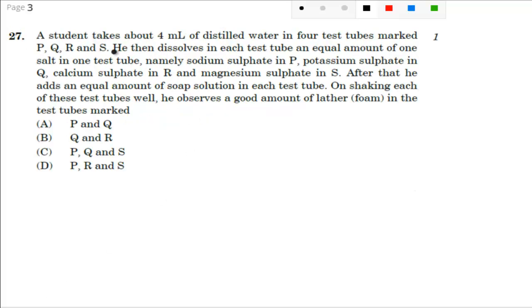Moving forward, question number 27: A student takes about 4 mL of distilled water in 4 test tubes marked P, Q, R, and S. So you have 4 test tubes: one is P, one is Q, one is R, and one is S.